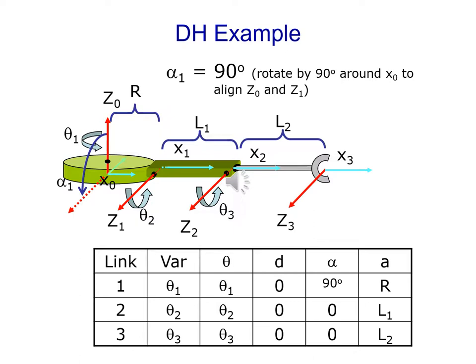Let us obtain all parameters. A very interesting parameter here is alpha_1, which is the joint twist or the twist angle. For this case it is going to be 90 degrees, because it rotates 90 degrees around x(0) to align z(0) and z(1).